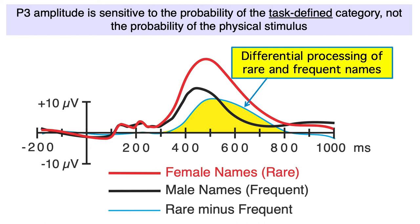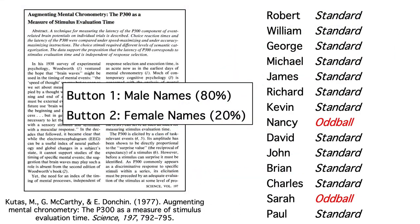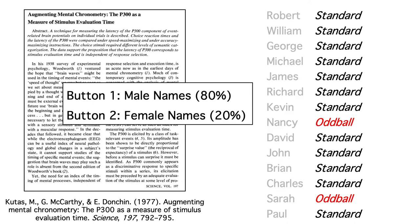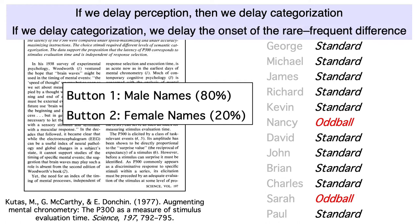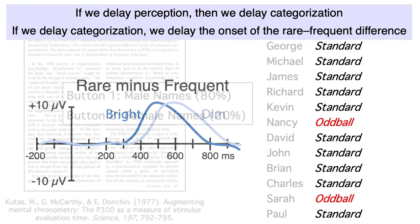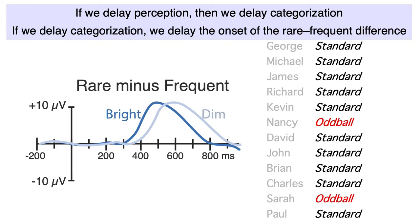Now, let's think about what would happen if we made the names dimmer. This would increase the amount of time it would take to perceive each name. If we slow down perception, this slowing will propagate to all subsequent processes, delaying the categorization of the stimuli as male or female. And if we delay the categorization, we should delay the onset of the rare minus frequent difference. It should look something like this, with maybe a 50 millisecond rightward shift of the rare minus frequent difference wave for the dim stimuli.